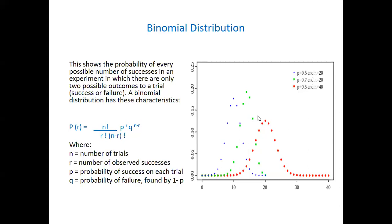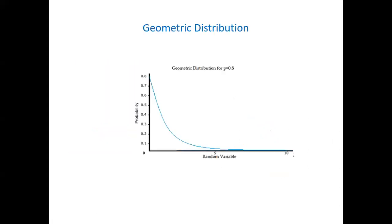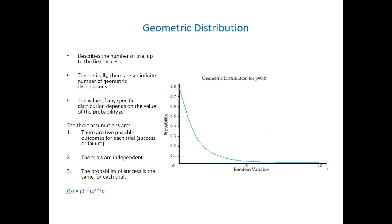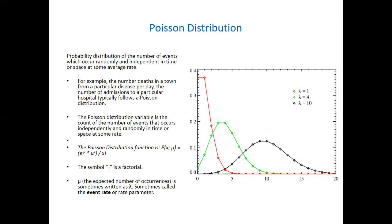Actually, any distribution, once the sample size increases, it asymptotically approaches normal distribution. I'll just skip this one, but I will give you the slides - you can read it. Let's just talk about Poisson distribution.